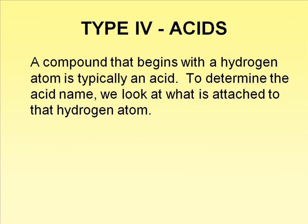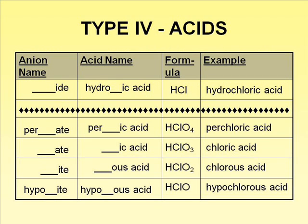The final category of compounds that we will name are acids. Acids are easy to identify — they begin with a hydrogen atom. There is a rather complicated system for naming acids. The acid name depends on the anion bonded to the hydrogen. Binary acids are at the top of the chart. You add the prefix hydro and change the ending to -ic. The root of the anion remains the same. This example is hydrochloric acid.